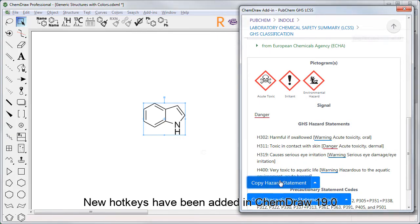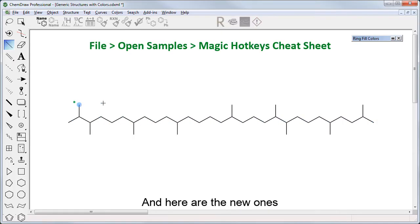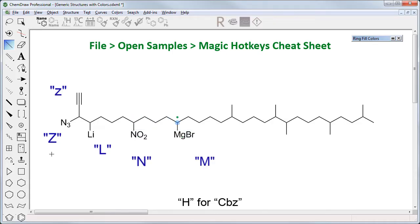New hotkeys have been added in ChemDraw 19, you can follow the path above to find the new cheat sheet, and here are the new ones. So we have capital Z for azide, capital L for lithium, capital N for nitro, capital M for MgBr, capital H for Cbz, Y for Boc, capital Q for Fmoc, and capital O for COOH.